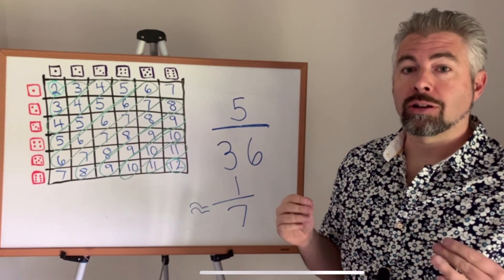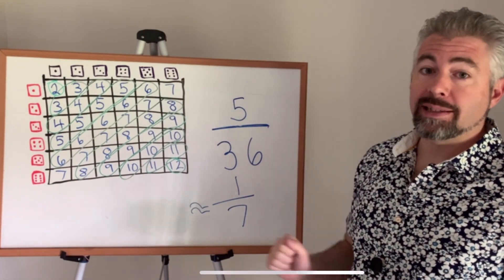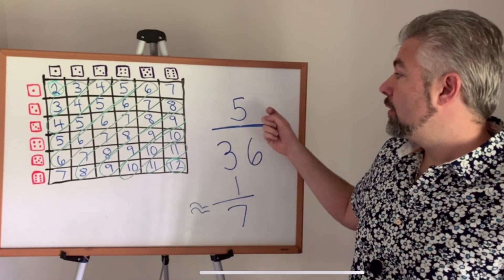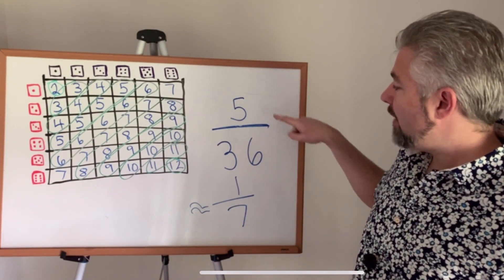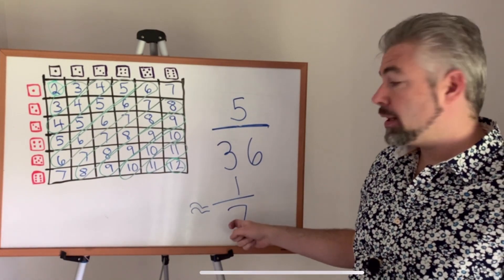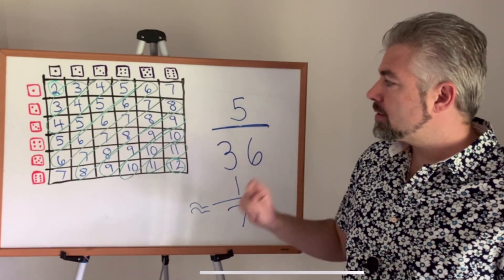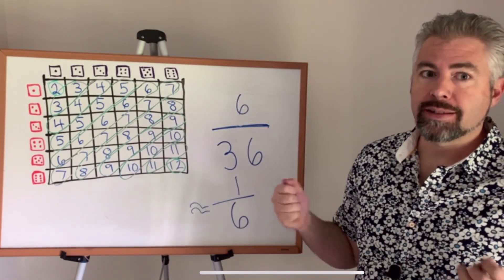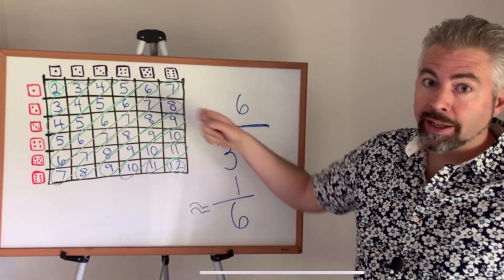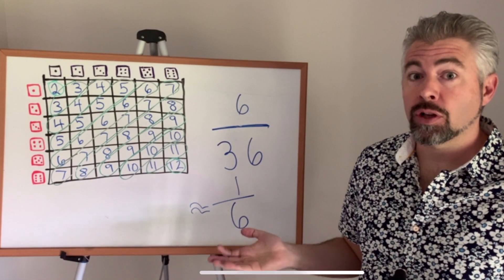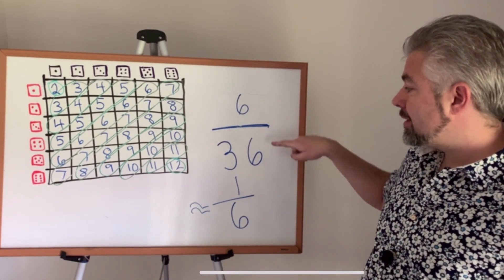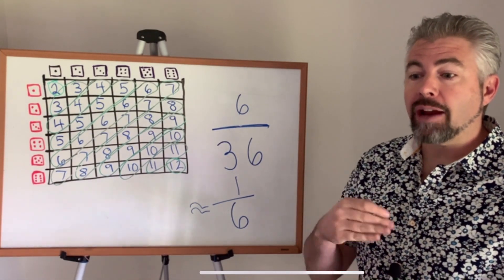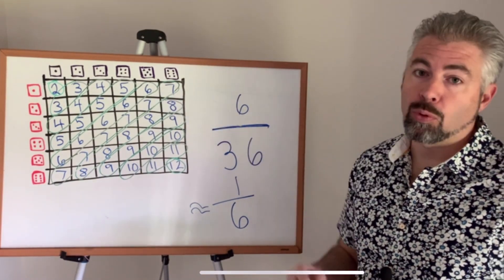And the best spots on the board are our eights and our sixes. There are full five different ways to make each of those. So if you've ever wondered why those numbers are red and the rest are in black, that's because they're so much more likely to come up. Now five out of 36 doesn't exactly reduce, but it's pretty close to one seventh. So imagine every seven rolls, you're going to get an eight, every seven rolls, you're going to get a six. And finally, our seven, you can't get a resource with a seven on it. It's just too powerful. It's probably why it's reserved for the robber. But our odds here are six out of 36 or one out of six. So if you're playing a three player game, every two rounds on average, you'll come up with one seven. So now let's look at how to use these probabilities to make the best decisions when you're playing Catan.